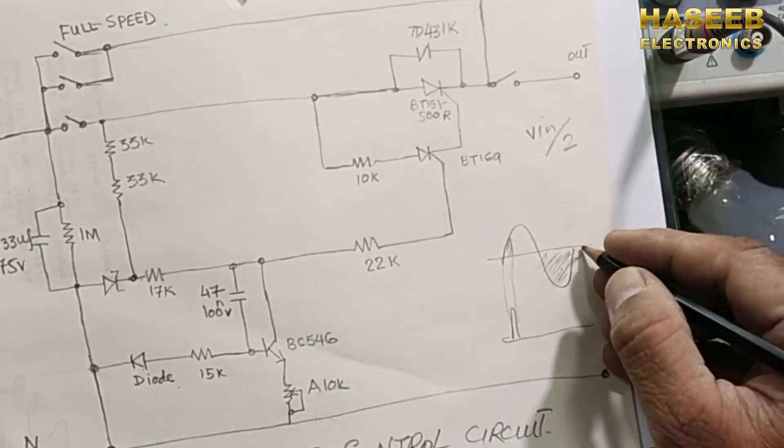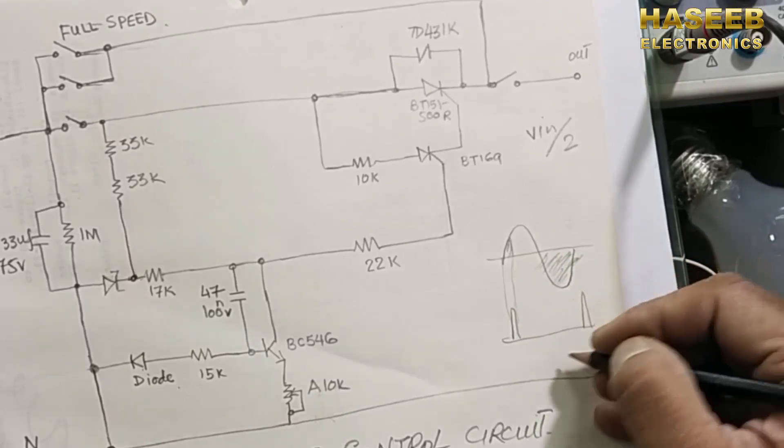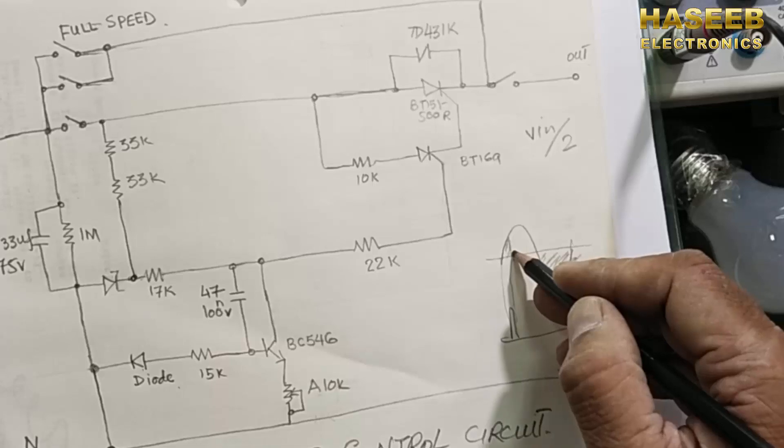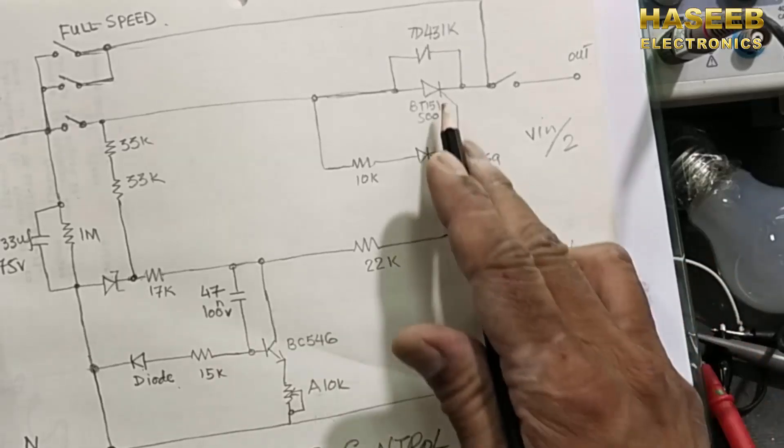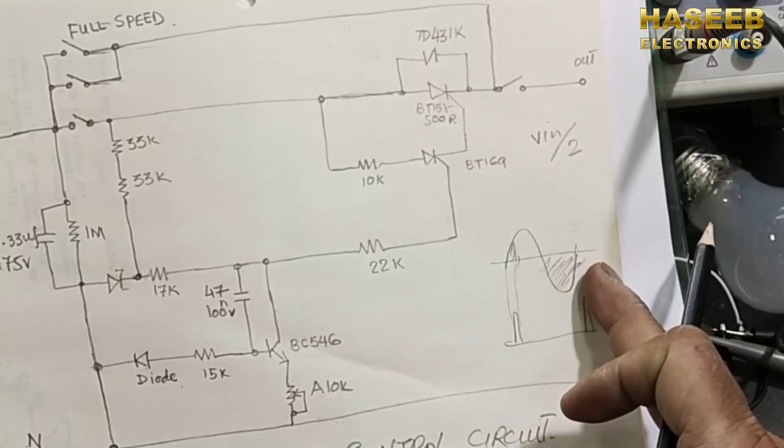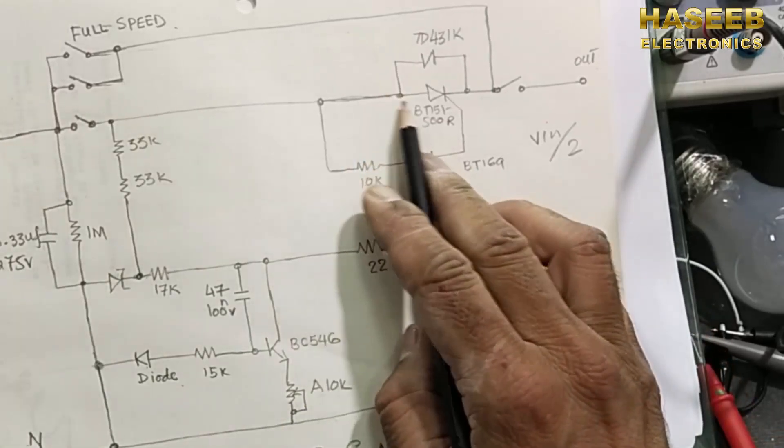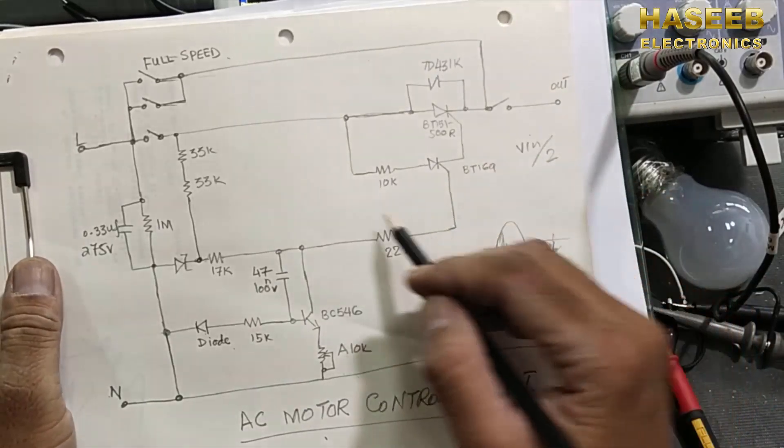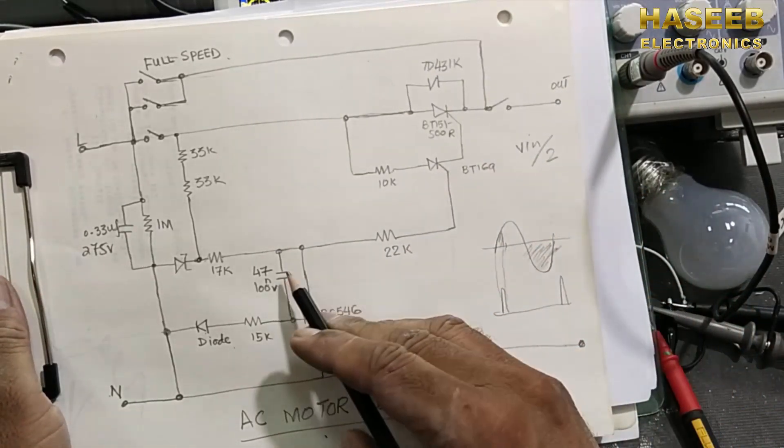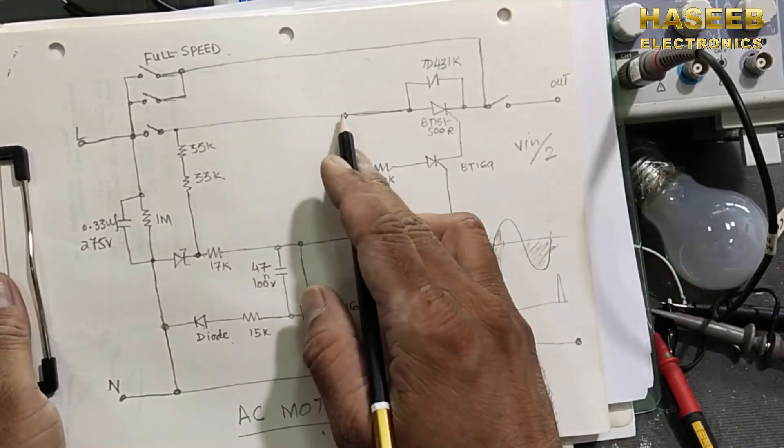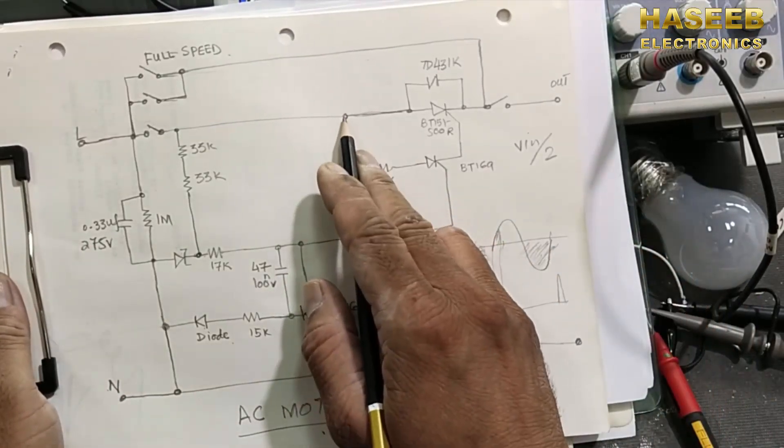Then from the next cycle we will take peak here. So it is skipping from this point to this area. Why? SCR will remove this negative peak because it is connected anode and we are taking to cathode output. And here we have BT169 SCR and we are controlling the conduction time.